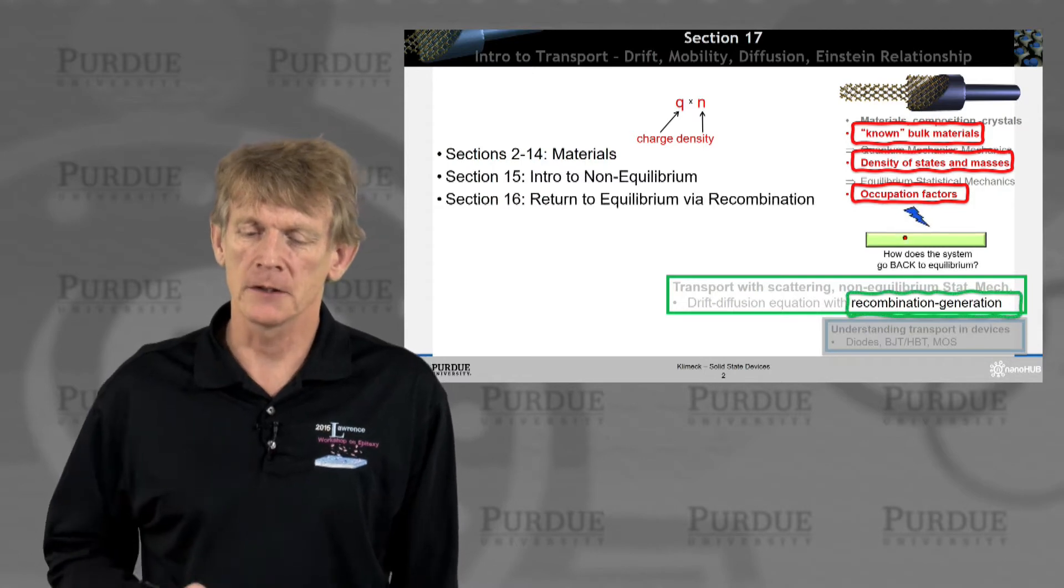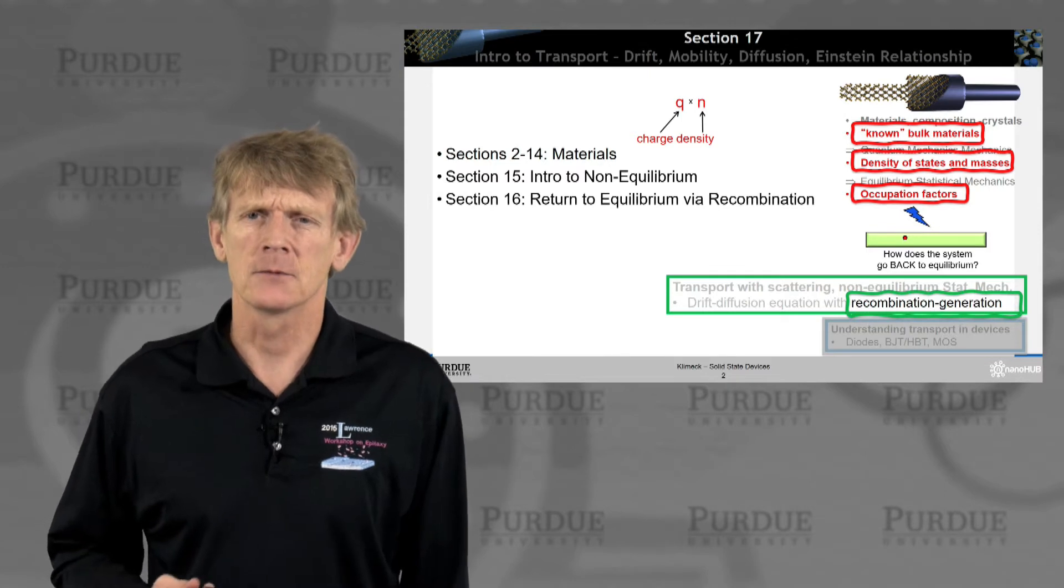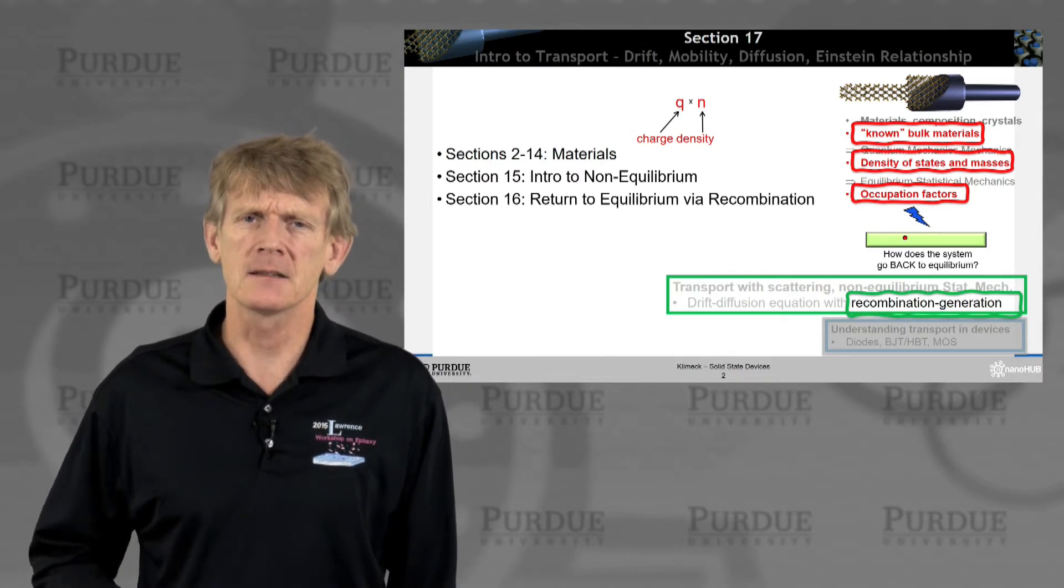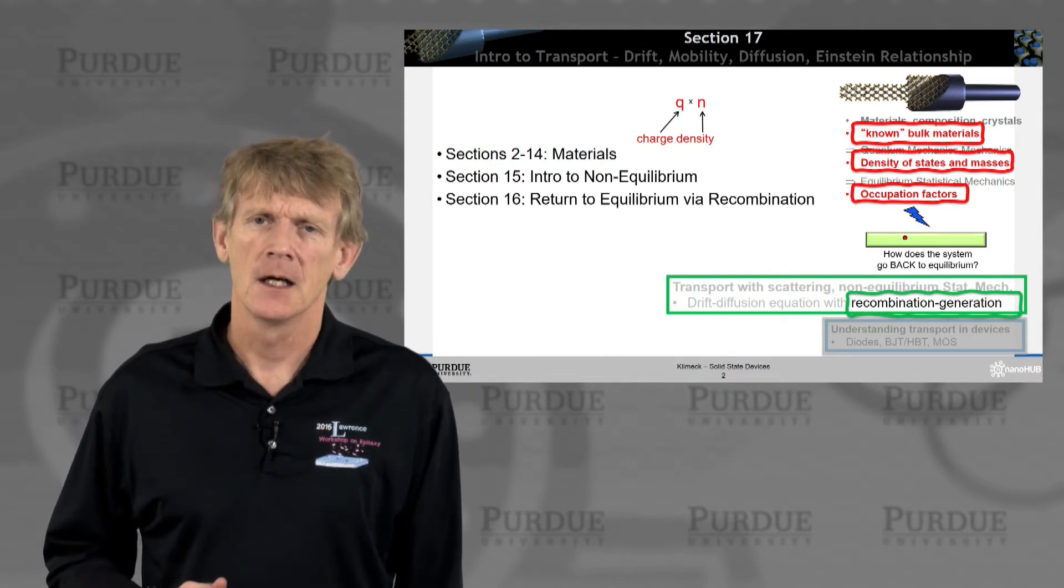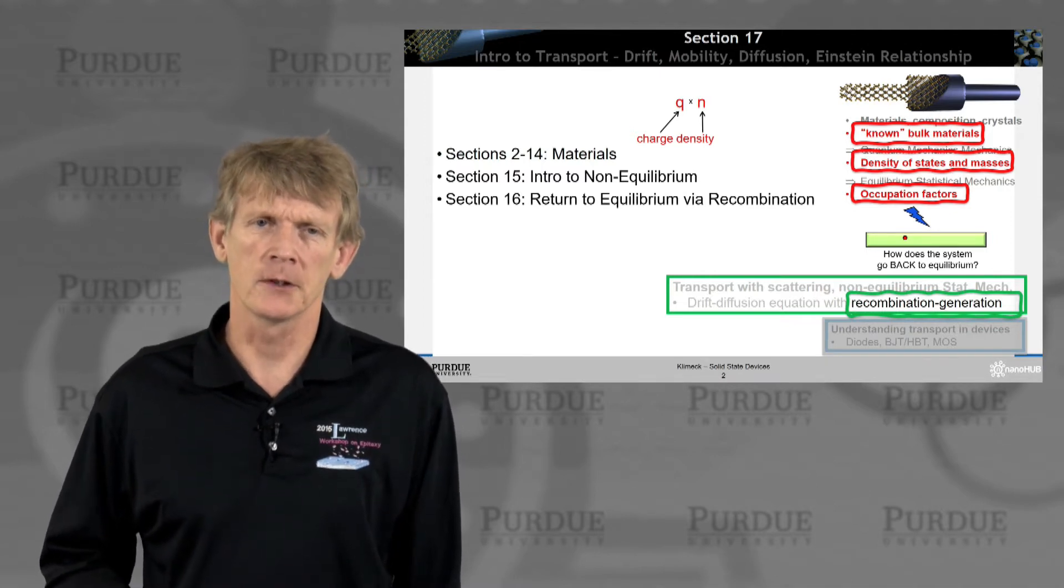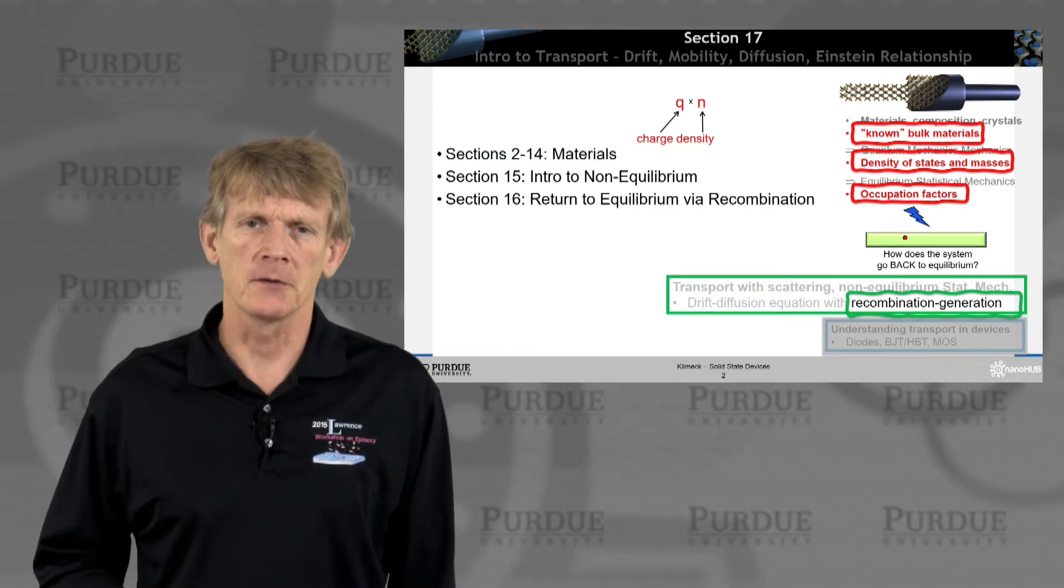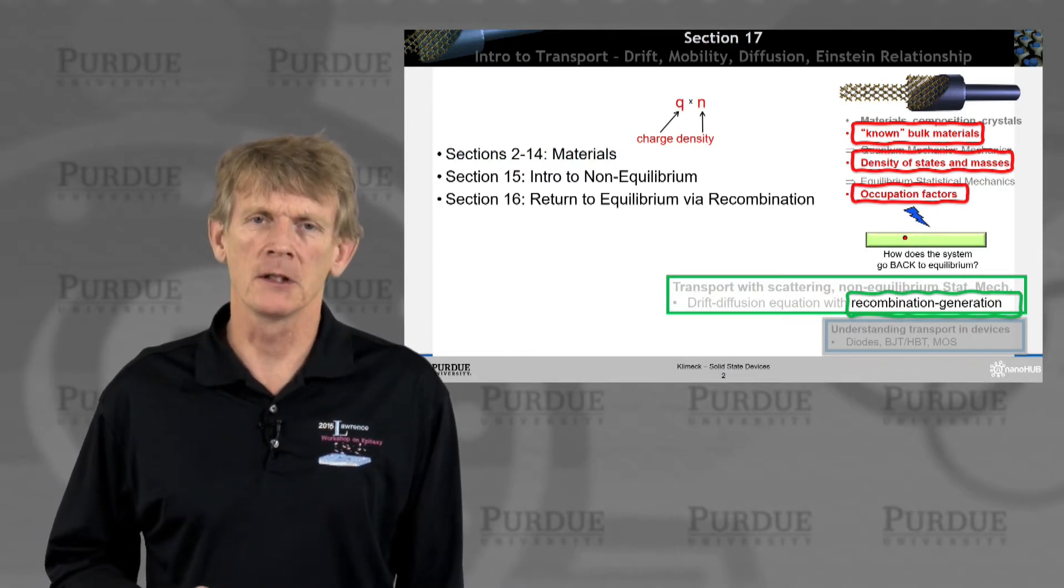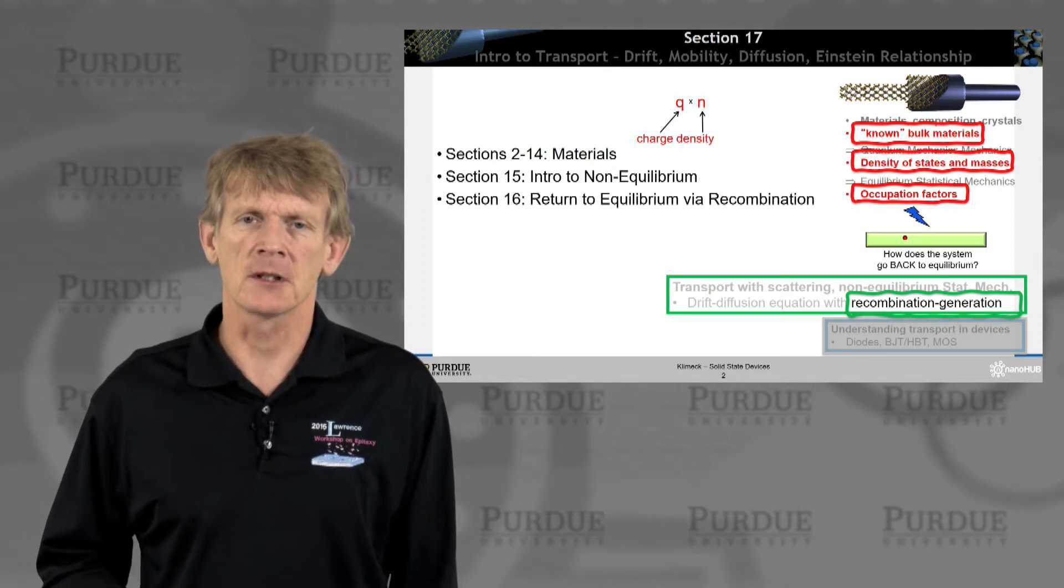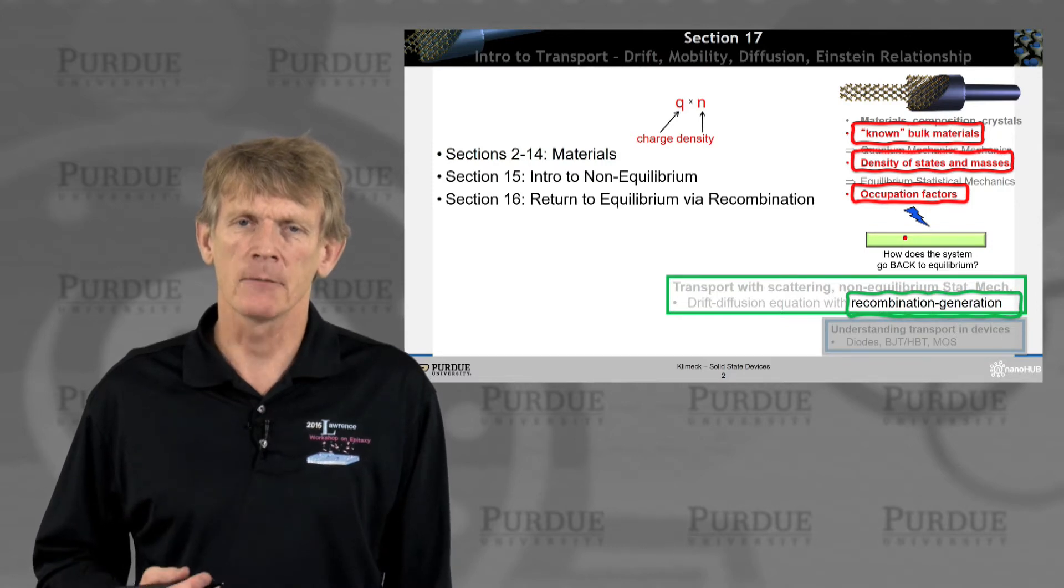We learned that we can deal with bulk material parameters that are known. We introduced something called a density of states, an occupation factor. And then we let that be followed by an introduction to non-equilibrium where we discussed the concept of detailed balance and non-equilibrium itself. And then we discussed how to return to equilibrium via recombination and scattering processes.